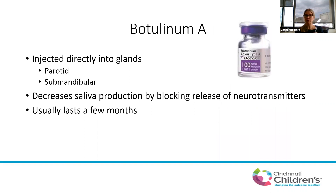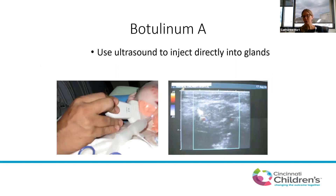Botox is something we use quite frequently in kids who are having issues aspirating saliva. In the salivary glands, it decreases production by blocking the release of neurotransmitters. It typically only lasts a couple of months — somewhere between two and three months — and then you have to re-inject. Our interventional radiology colleagues do the Botox injections under ultrasound guidance directly into the salivary glands. You can inject the parotid glands and the submandibular glands depending on the extent of benefit you're trying to achieve.